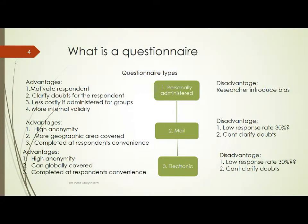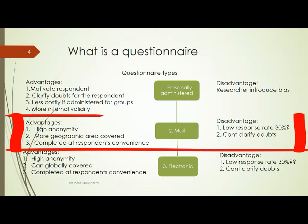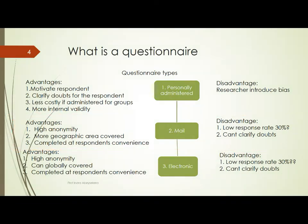When it comes to mail questionnaires, there is a high level of anonymity as an advantage, and they can be sent to many geographic areas. The respondent has the liberty to complete it at their convenience. The disadvantage is that there could be a low response rate and the respondent is unable to clarify doubts about the questions.